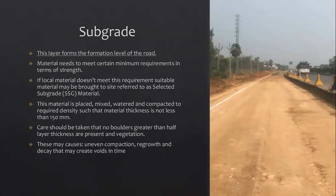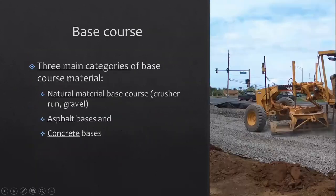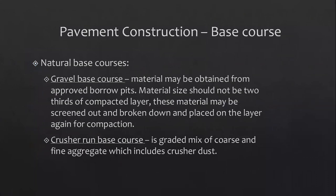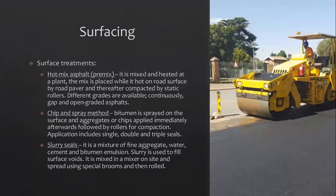The subgrade is the layer that forms the formation level of the road — it is the original soil just after removing the spoil (the stuff with vegetation). The subbase is material brought in and placed on the formation layer. For base courses there are three main categories: natural material, asphalt, and concrete. Natural base courses include gravel base courses or crusher run base courses. You also get a prime coat and a tack coat. For surfacing, types include hot mix asphalt (HMA), chip and spray method, and slurry seal.